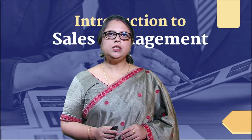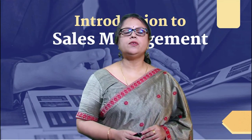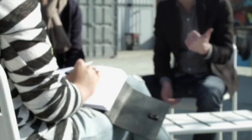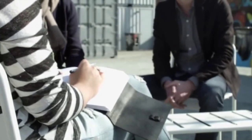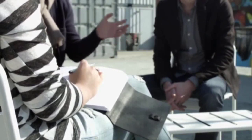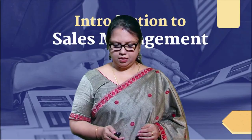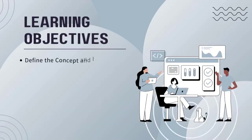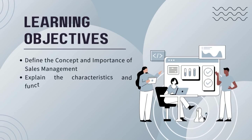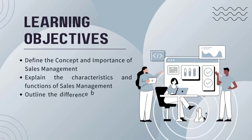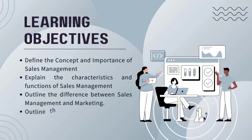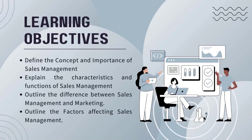This unit introduces you to the subject of Sales Management. The learning objectives of this unit are: first, to define the concept and importance of sales management; then explain the characteristics and functions of sales management; then outline the difference between sales and marketing management; and at the end, outline the factors affecting sales management.